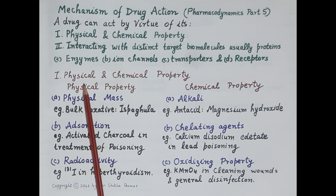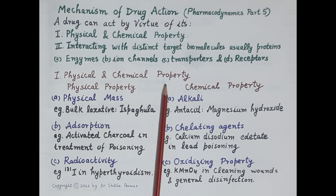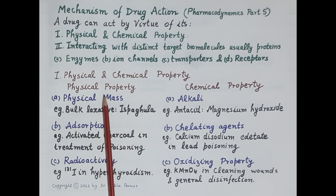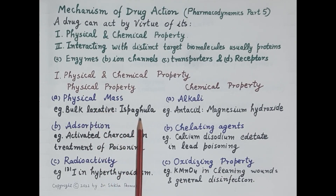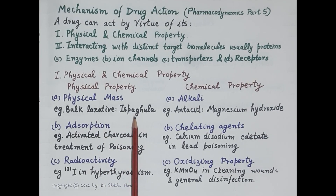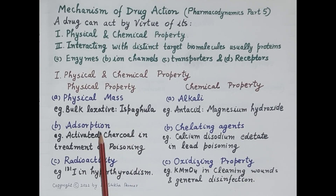Let's first discuss how drugs produce action by virtue of their physical and chemical properties. Under physical properties, one property is physical mass. For example, ispaghula is a drug — it's a bulk laxative used in constipation. Ispaghula absorbs water, swells in the intestine, and makes the stools bulky and easy to pass.